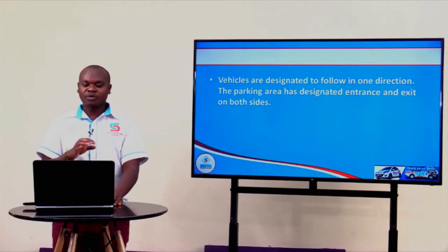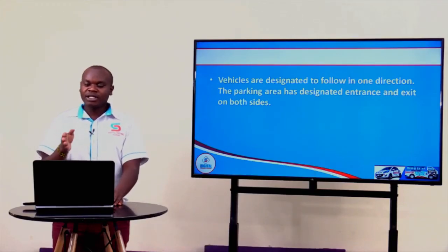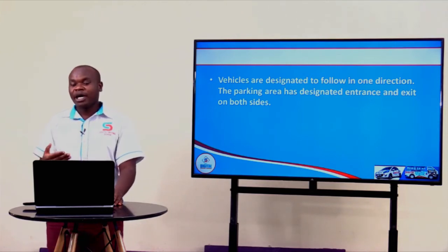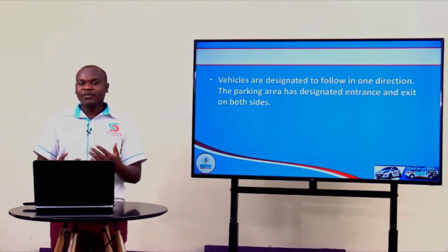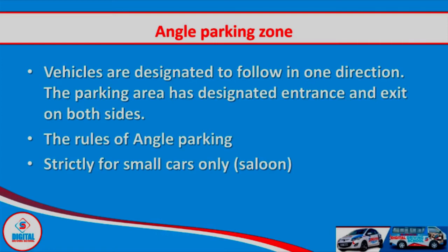In angle parking, vehicles only flow in one direction, whereby we have entrance and exit at both sides. That means if your entrance was at point A, your exit should be at point B. You are not supposed to exit at the same side or place that your entrance was. The angle parking is only meant for small cars — saloon cars or vehicles which fall under class B, whether light vehicle or automatic light vehicle, such as a Vitz or a ProBox.